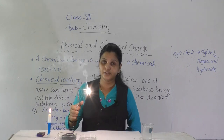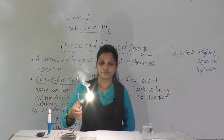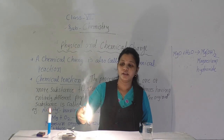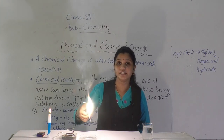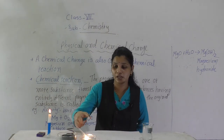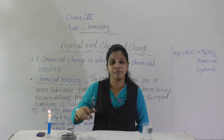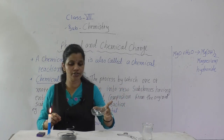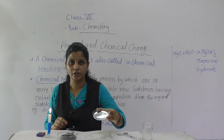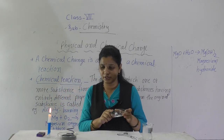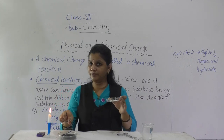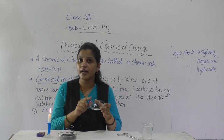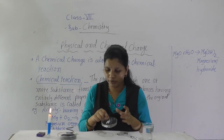Just observe. See the white light. This magnesium metal has reacted with oxygen, because oxygen supports burning — without oxygen no substance can burn. Now see here in this petri dish: there is white ash. This ash is a totally new substance formed from this magnesium ribbon when it reacted with oxygen.